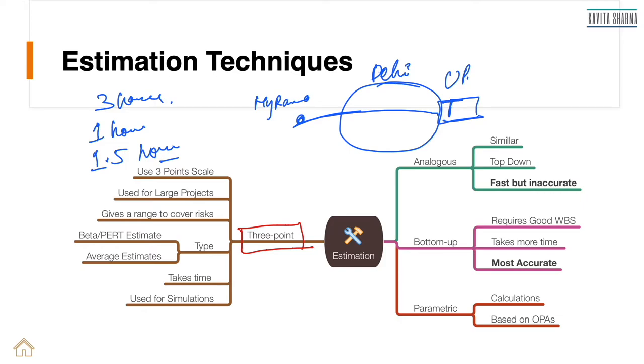So what did I just gave him, I gave him three point estimates. The three hours is a pessimist estimate, when things can go wrong. One hour is optimistic estimate, when everything is falling in place, timely. And 1.5 hours is most likely estimate.